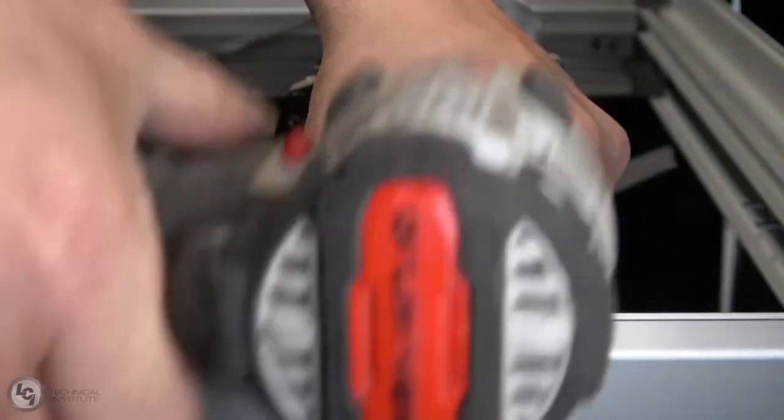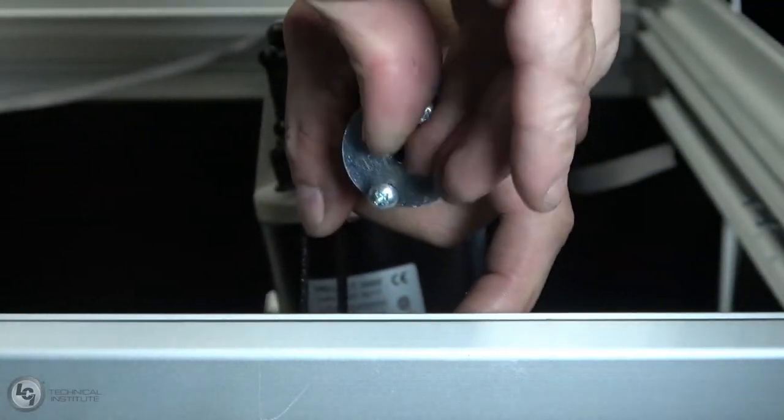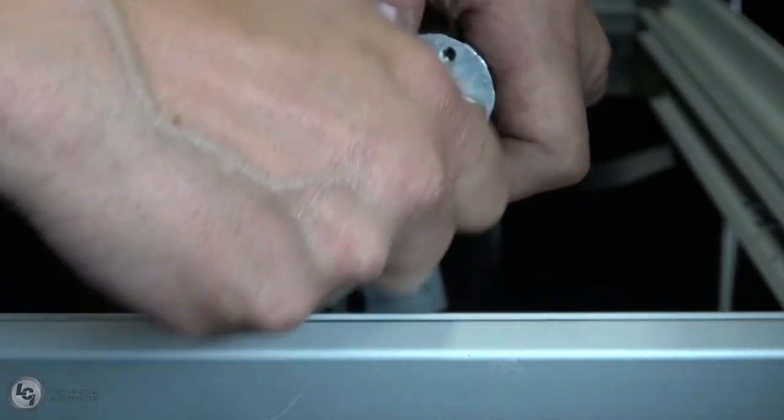The second obstacle will be the Phillips screws holding the end plate onto the shaft. Loosen these and remove them to allow the plate to come free. Be careful not to strip out the holes.